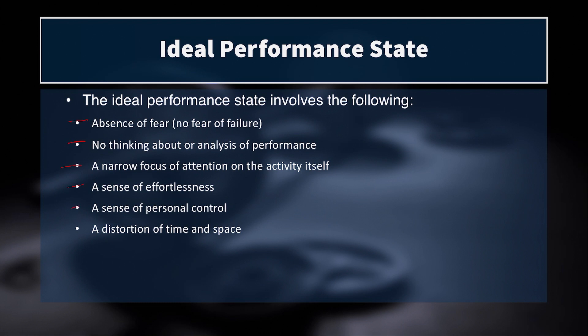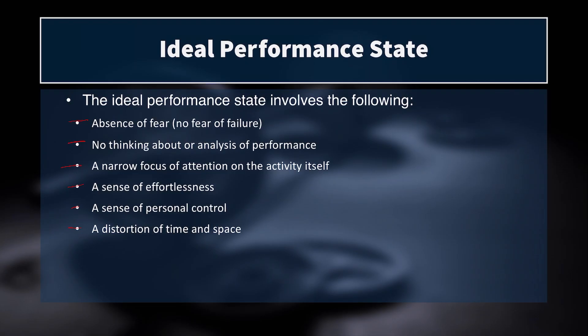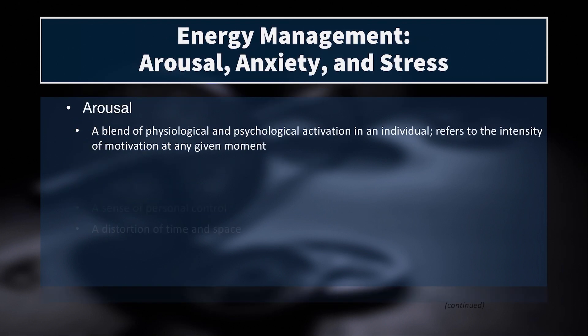There's also a sense of personal control — you are in control of your body and the object, whether it's a ball, a bat, or an opponent. And then there's a distortion of time and space; it's almost like time slows down. You can live almost a lifetime in those seconds between making a break for the goal line, receiving the kick, or taking a free throw. This is called the ideal performance state.